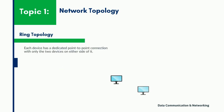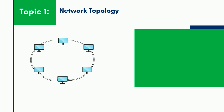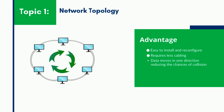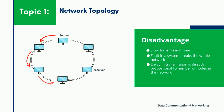In the ring topology, each device has a dedicated point-to-point connection with only the two devices on either side of it. The data travels from node to node with each node along the way handling every packet. The main advantage of ring topology is that it is very easy to install and reconfigure. It requires very less cabling, and since the data moves in one direction, there are very few chances of data collision and fault isolation is very simplified. However, a ring topology can be slow with transmission in case of a large number of nodes, and a single fault in the system can break down the whole network.